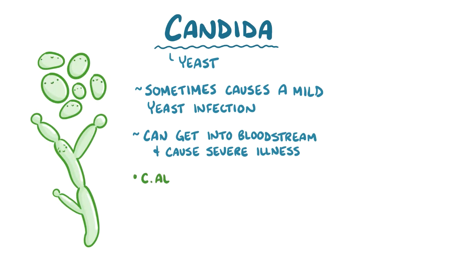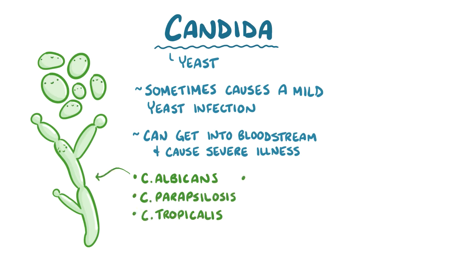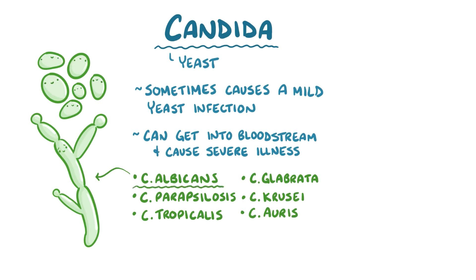There's C. albicans, C. parapsilosis, C. tropicalis, C. glabrata, C. krusei, C. auris, and the list goes on. Of these, the most common one is C. albicans.